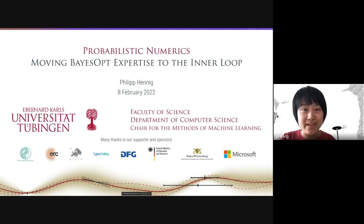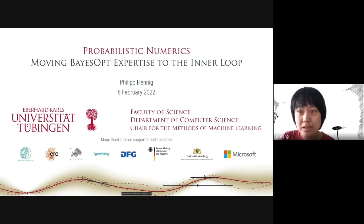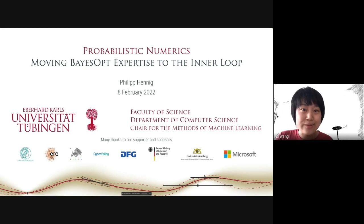Welcome everyone. We're continuing the base speaker series and are very honored to have our first speaker, Professor Philip Hennig, speaking today. Philip holds the chair for the Methods of Machine Learning at the University of Tübingen and is also an adjunct senior research scientist at the Max Planck Institute for Intelligent Systems. Throughout my research career I always see Philip as one of, if not the most, iconic researchers in probabilistic numerics.